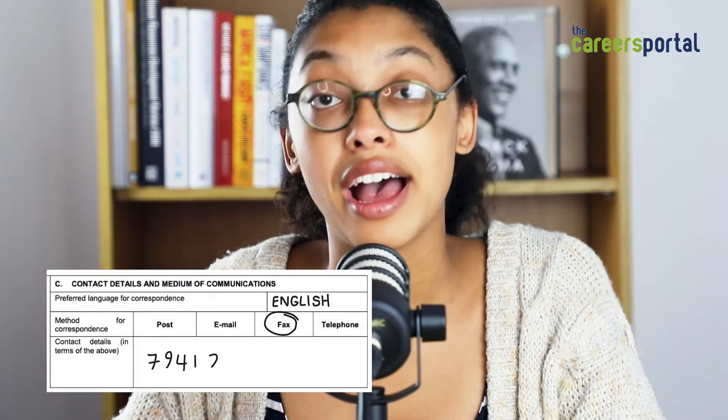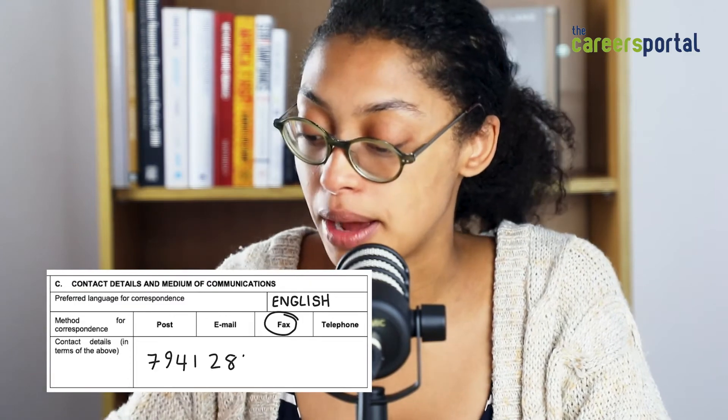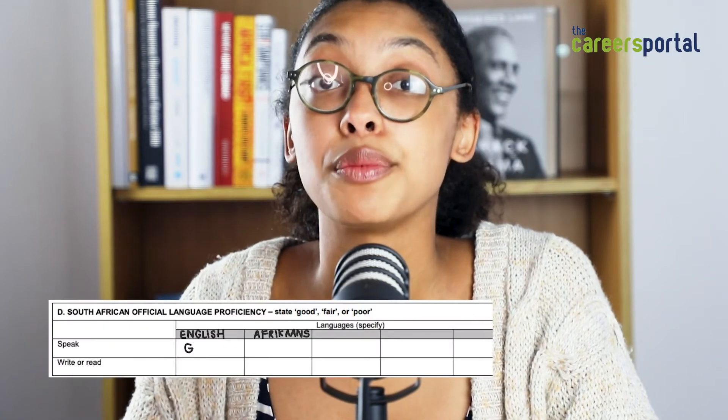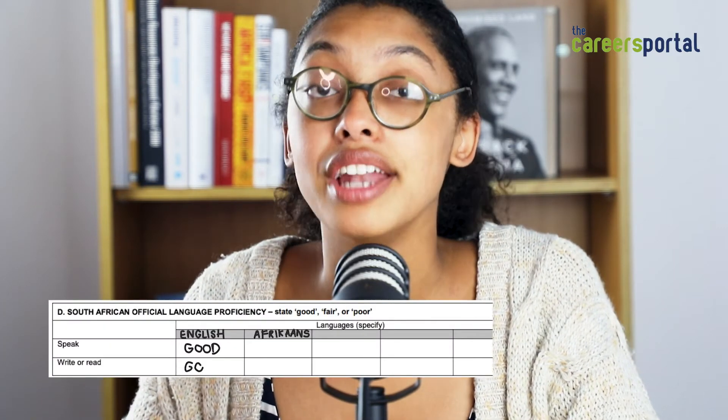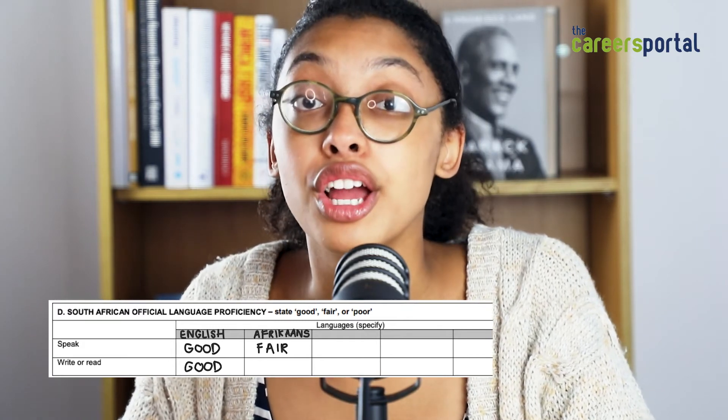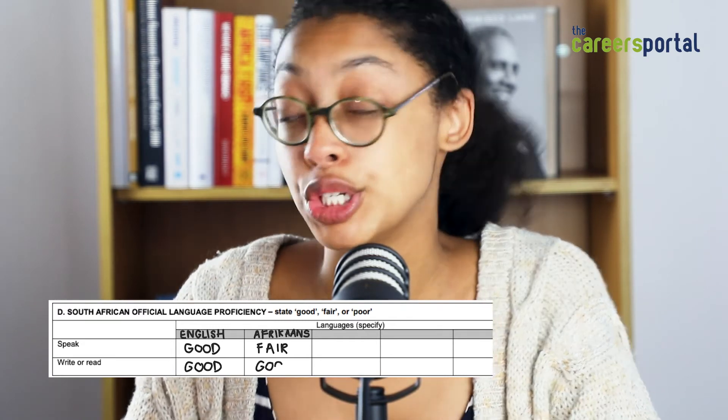I've chosen fax, so I would fill in my fax number. As for languages, you'd have to fill in the speak row — you'll then say whether you're good, fair, or poor under each language in each block. For the write or read column, you'll do the same.